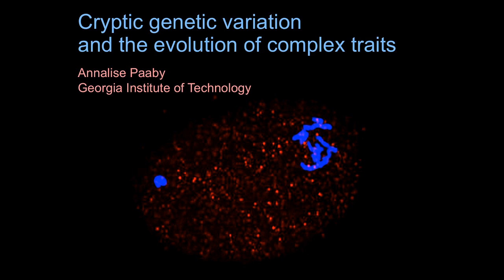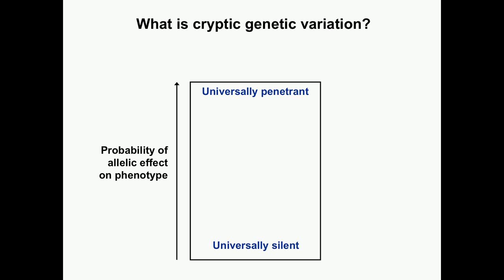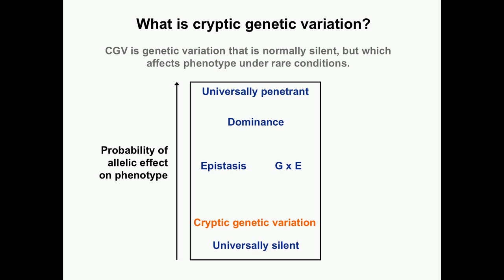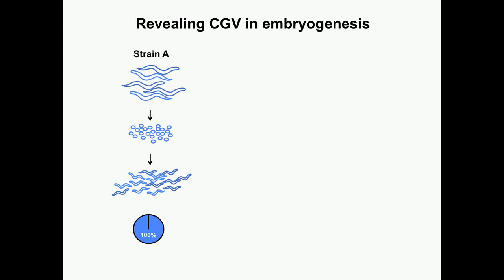But this variation is hard to see because it's cryptic. If we consider the full spectrum of all natural genetic variation, we can acknowledge that there are some alleles that never affect phenotype under any conditions — they're universally silent — and some alleles that always affect phenotype in the exact same way — they're universally penetrant. There are also alleles that rely on dominance or recessivity, gene-by-gene interactions or epistasis, or gene-by-environment interactions. Cryptic genetic variation is really a subclass of alleles that exhibit epistasis or gene-by-environment interaction, with the caveat that in order for a cryptic allele to penetrate to phenotype, something has to happen — the system has to be perturbed, like a new mutation coming into a genome or population, or a change in the environment. So cryptic genetic variation is just natural genetic variation that has the potential to affect phenotype under rare conditions.